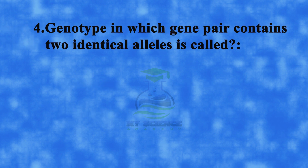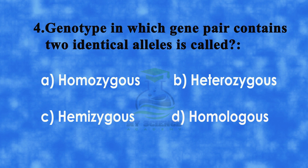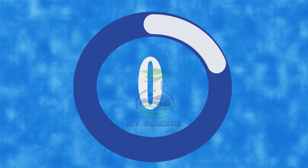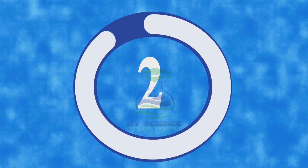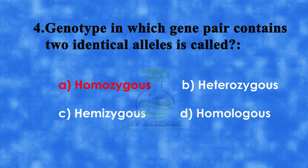Question 4: A genotype in which the gene pair contains two identical alleles is called — A. Homozygous, B. Heterozygous, C. Hemizygous, or D. Homologous. Correct answer is A. Homozygous.